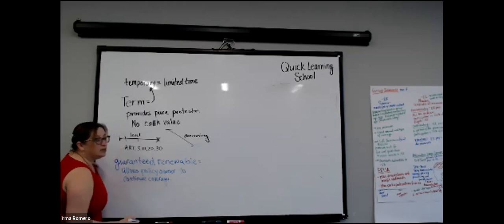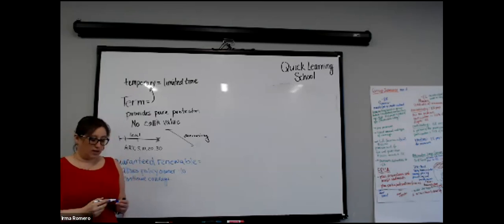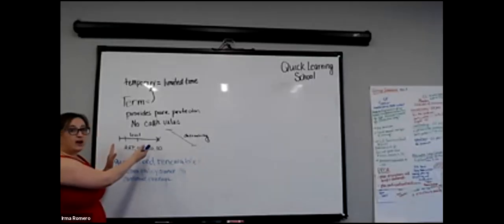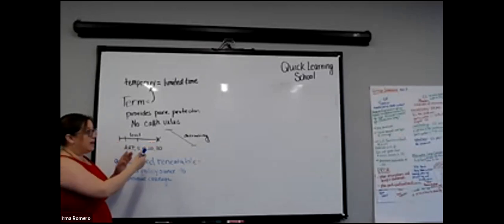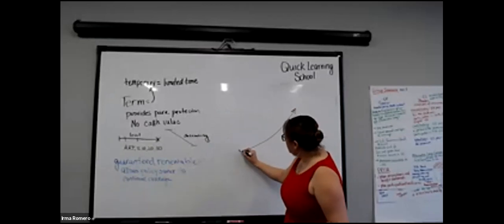Is the guaranteed renewable feature a rider? No, it's a feature — a common characteristic in most policies. You want to read the policy provisions to see if it's renewable or non-renewable. If it's renewable, the contract will tell you what the premium will be if you exercise the guaranteed renewable option. The premium goes up significantly because they're averaging the mortality risk — and every year you get older, your premium increases.